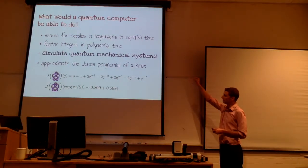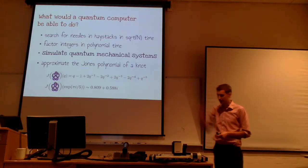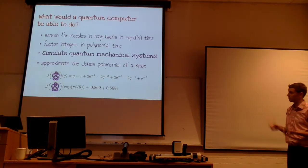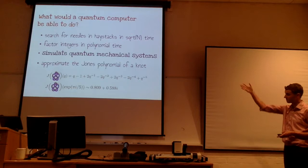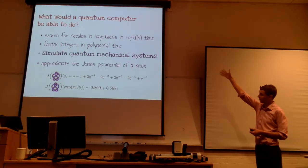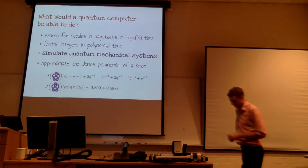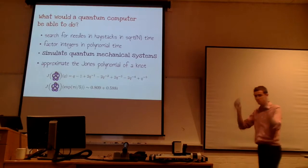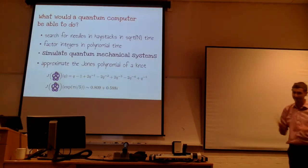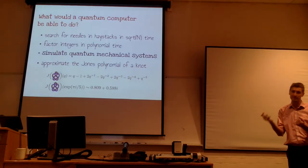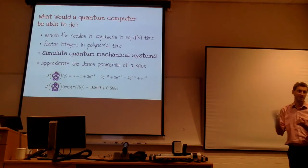The third thing — simulating other quantum mechanical systems — is perhaps really the big deal. It goes back to the origins of quantum computing: Feynman talked about this well before the algorithms for search and factoring. The point is that there are lots of interesting real-world systems out there — superconductors, photosynthesis, things like that — which are extremely hard to model with classical computers, and we'd have far better modeling and simulation tools if we had access to a quantum computer.